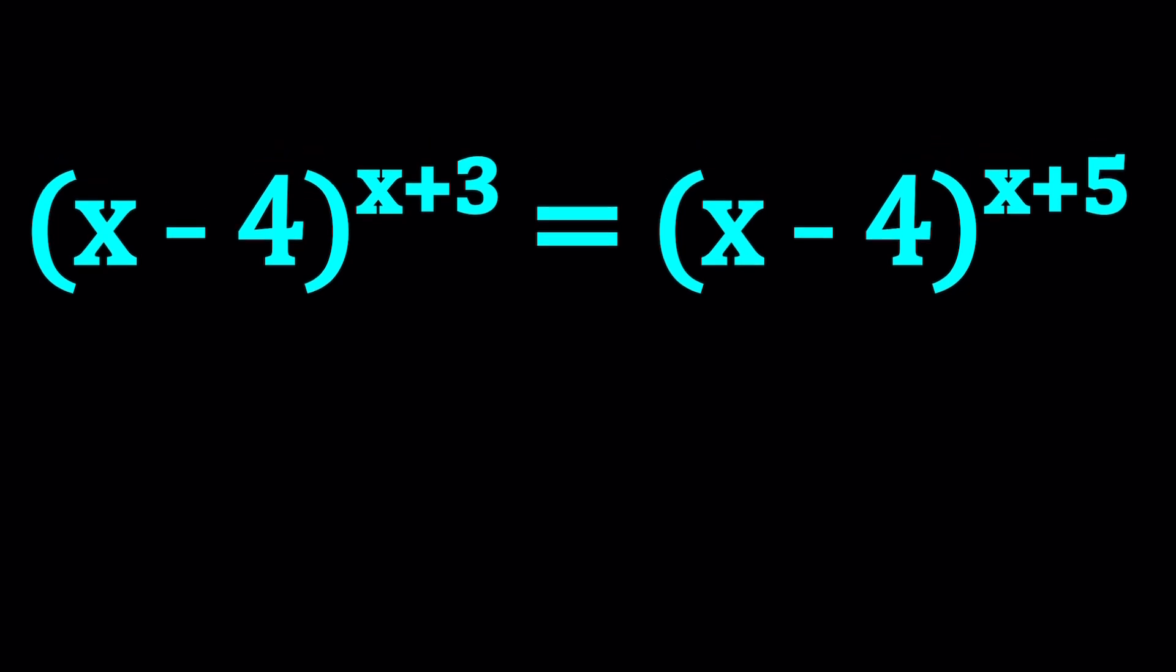So I'm going to start with 0 because 0 is kind of interesting. So suppose, let's just say first case, x minus 4 is equal to 0, which implies x equals 4. If x is 4, then we have 0 to the power 3 and 0 to the power 5. Obviously, they're equal, so x equals 4 is a valid solution. Awesome.